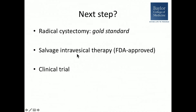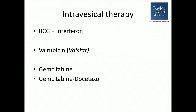For BCG unresponsive patients, radical cystectomy is the gold standard, but many patients are either not willing or not fit for that operation. So there are salvage intravesical therapy options — only one is FDA approved — and a broad array of clinical trials. Intravesical therapies described in phase two and some phase three data include BCG plus interferon, valrubicin, gemcitabine alone, and gemcitabine plus docetaxel as a doublet.